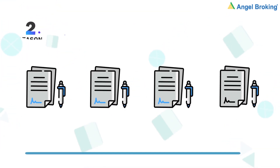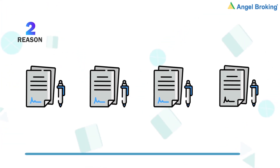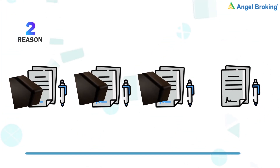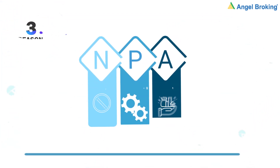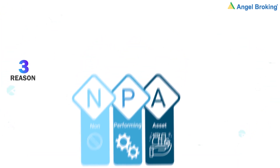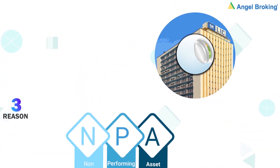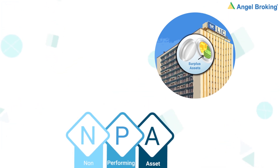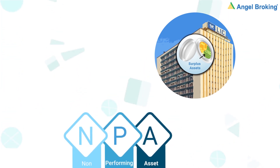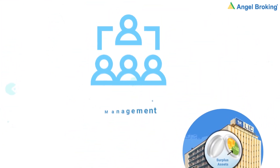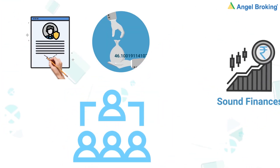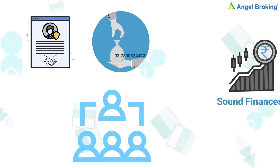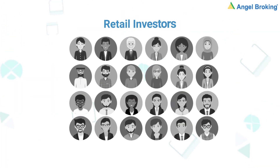Number 2, aapko ye jankar hairaani hogi ki India mein har chaar naye policies mein se teen policies LIC issue karta hai. Number 3, LIC ke non-performing assets recent past mein thode se badhe hain. However, LIC ne bad loans se nipat ne ke liye sufficient assets tayaar rakhe hain, isliye non-performing assets se LIC ke business ko koi bhi khatara nahin hai. Responsible management, sound finances aur customer friendly policies ki wajah se LIC ka claim settlement ratio India mein sabse highest hai, 98%.